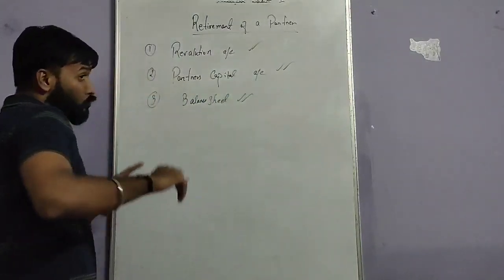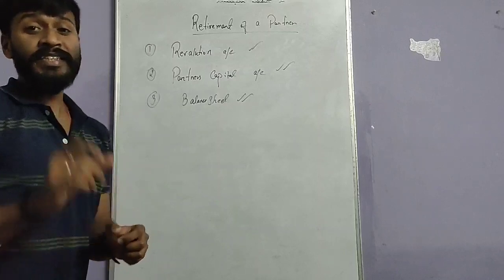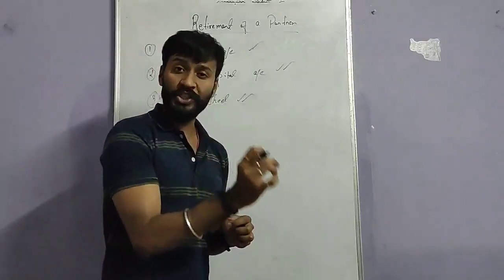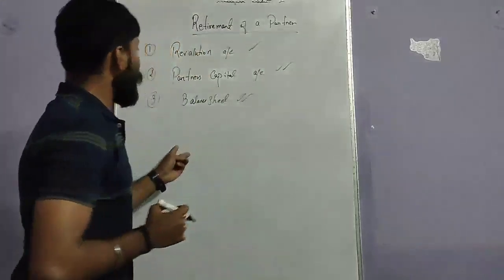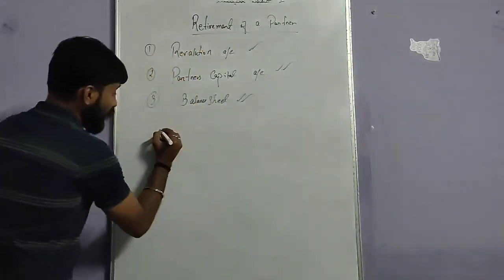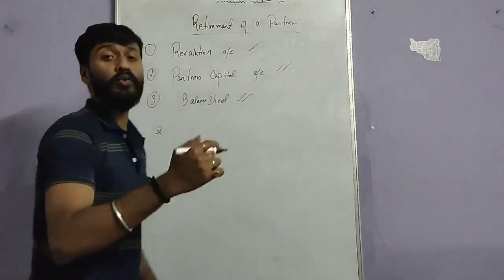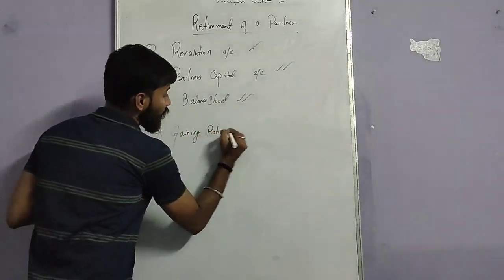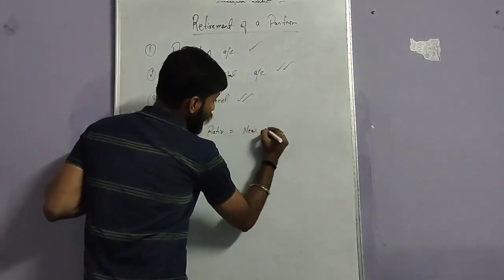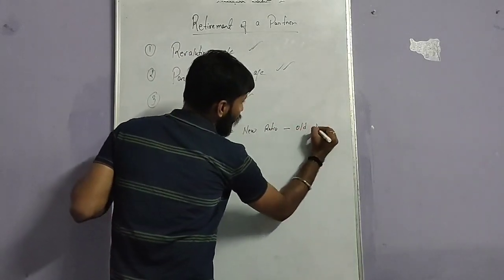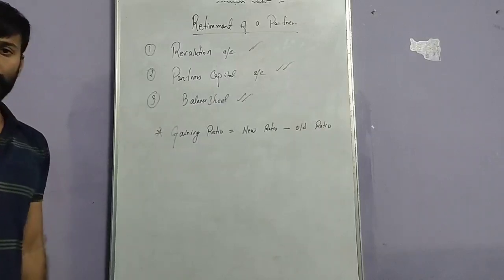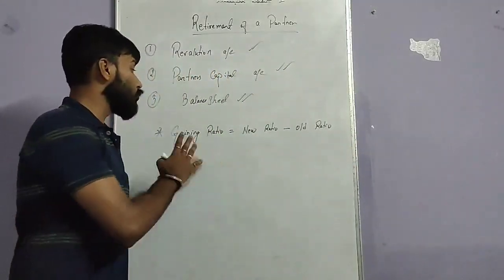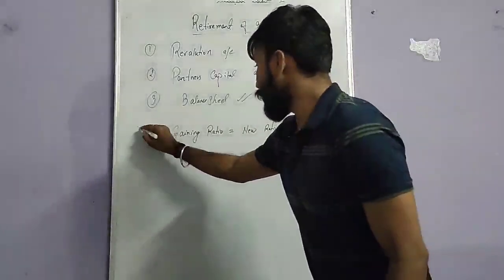Now in the admission of a partner, the most important was the sacrificing ratio. As we know, the formula of sacrificing ratio was: old share minus new share. Now in this retirement of a partner, we will follow the gaining ratio. We have to calculate the gaining ratio. The formula of gaining ratio is: new ratio minus old ratio. Gaining ratio equals new ratio minus old ratio.